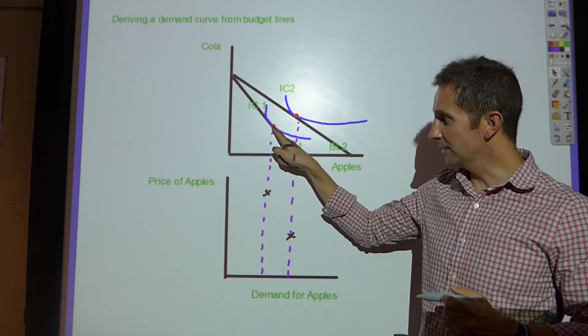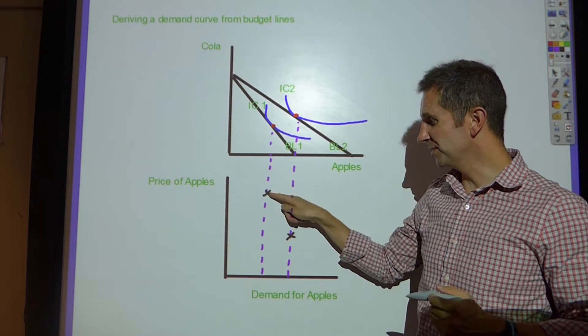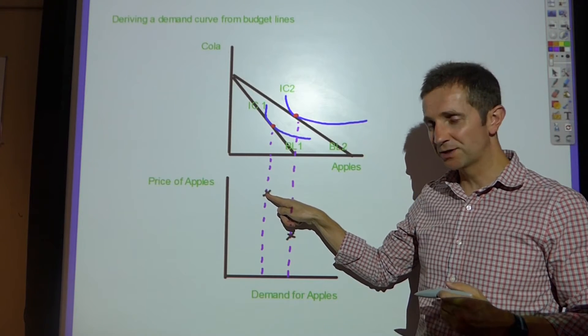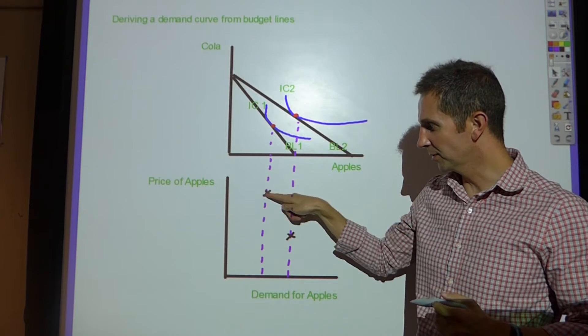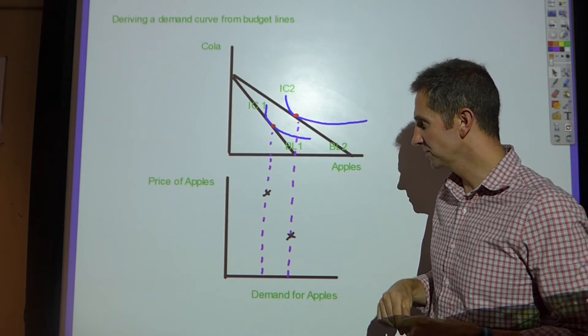I'm assuming that the price of apples is somewhere where X marks the spot. So the price of apples is about here, so a relatively high price.